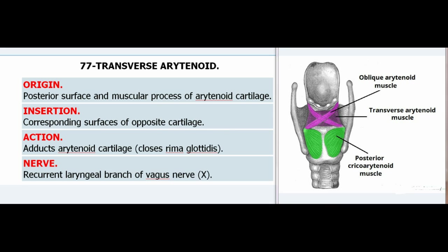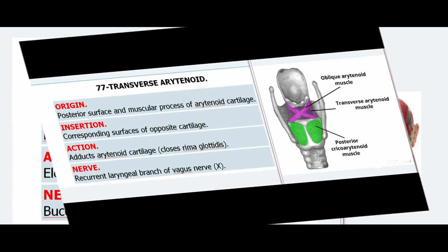77. Transverse Arytenoid. Origin: Posterior surface and muscular process of arytenoid cartilage. Insertion: Corresponding surfaces of opposite cartilage. Action: Adducts arytenoid cartilage, closes rima glottidis. Nerve: Recurrent laryngeal branch of vagus nerve (X).